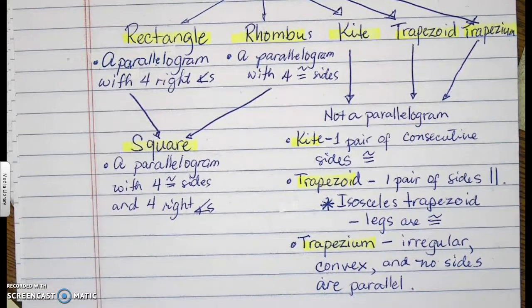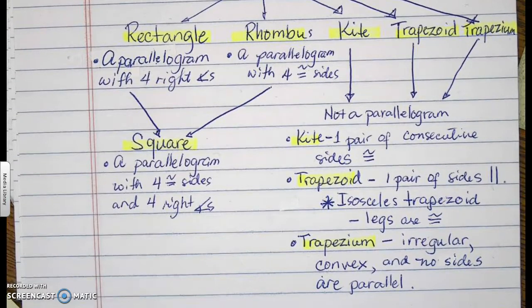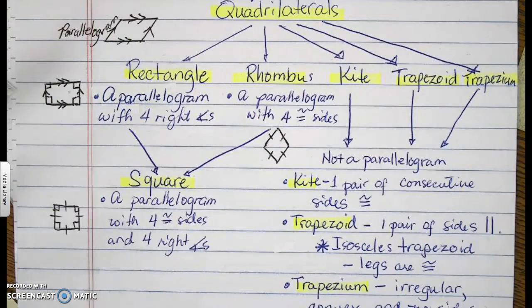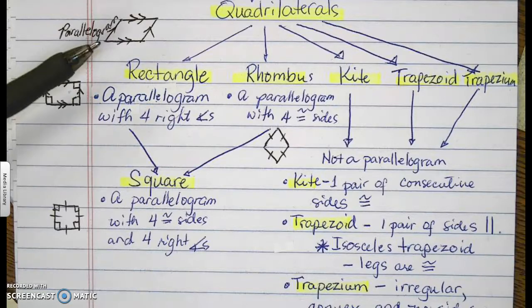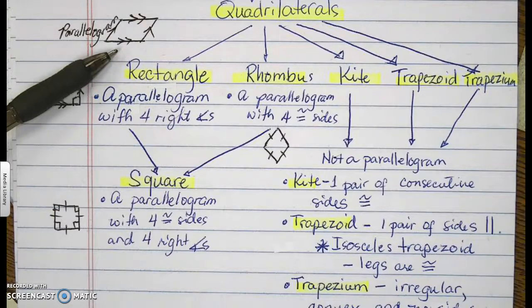A trapezium is an irregular convex quadrilateral that has no sides that are parallel nor congruent. So just for illustration purposes, a parallelogram, just a general drawing for a parallelogram, this is the drawing that you will see whenever somebody refers to a parallelogram.